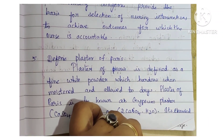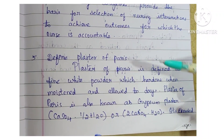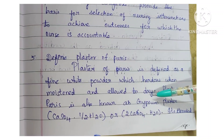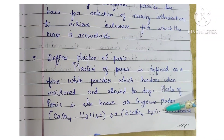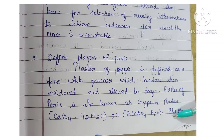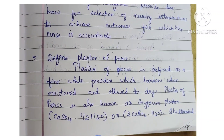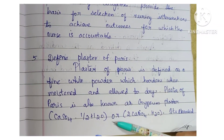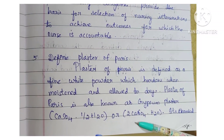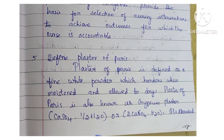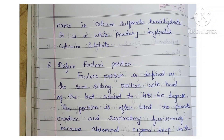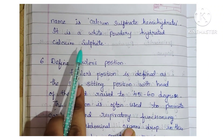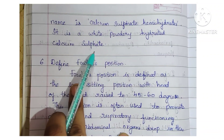Next question: define plaster of Paris. Plaster of Paris is defined as a fine white powder which hardens when moistened and allowed to dry. It is also known as gypsum plaster, containing calcium sulphate hemihydrate — chemical formula CaSO₄·½H₂O — or calcium sulphate dihydrate CaSO₄·2H₂O. Its chemical name is calcium sulphate hemihydrate, a white powder of rehydrated calcium sulphate.